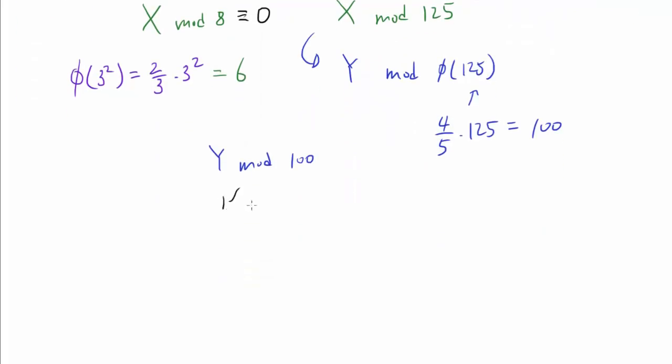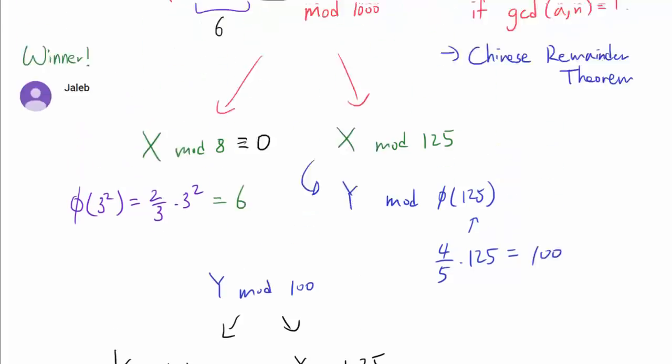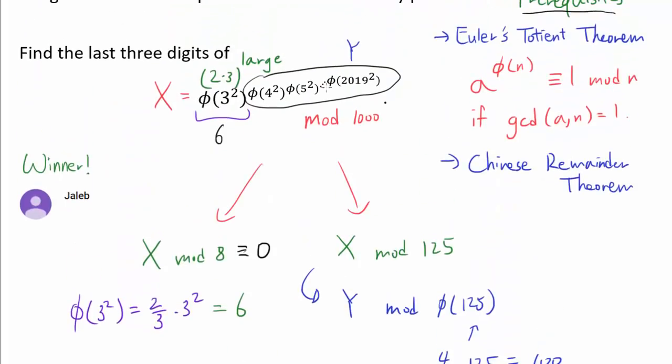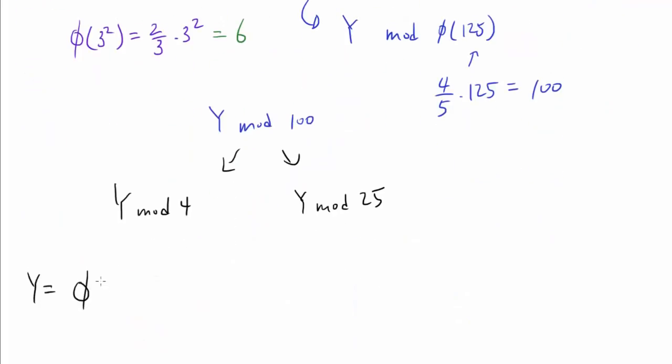Let's break it down one more time into Y mod 4 and Y mod 25. Because Y, if you look at it, Y is phi of 4 squared all the way to phi of 2019 squared. Because phi of 4 squared is 1 half times 4 squared or 8, we know Y mod 4 is going to be 0. Because we are raising 8 to a very large power, so the entire thing is going to be divisible by 4.